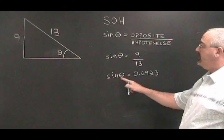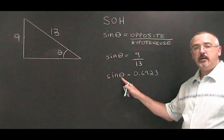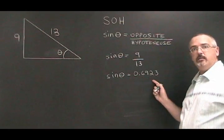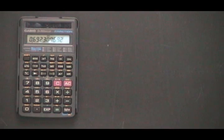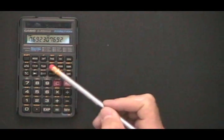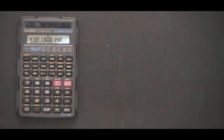What do we do to find angle theta when we know its value? With the sine value of our angle already in the calculator, if we press shift sine, we find out that our angle is equal to 43.8131 degrees.